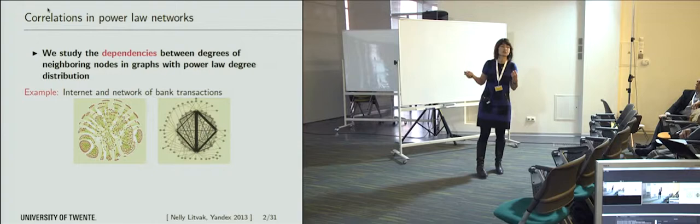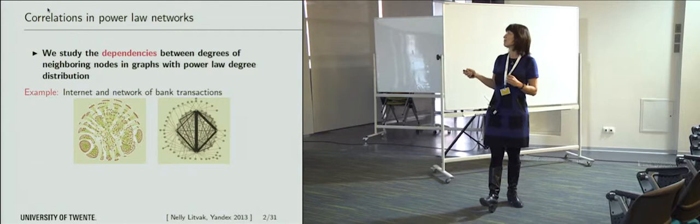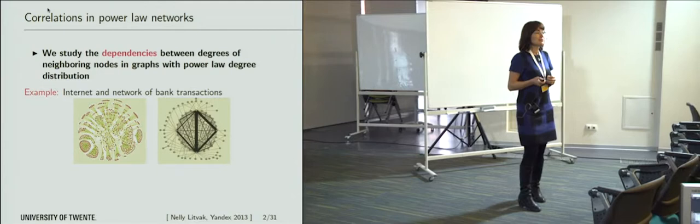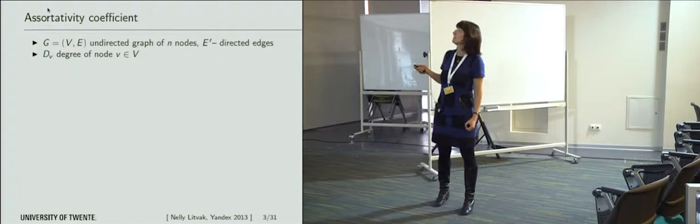In the network of bank transactions, most of the transactions go via the biggest banks and these hubs are right in the center. Obviously, if a big bank fails — as we were hearing two days ago about the contention of financial crisis — it will have a huge effect on the whole network. So how can we characterize how the network is wired? How can we compute and characterize it with some number?